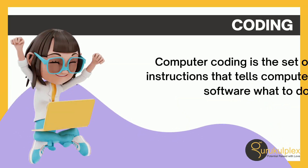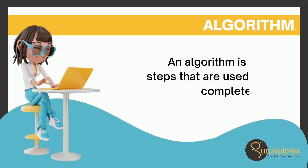Computer coding is the set of instructions that tells computer software what to do. An algorithm is a set of steps that are used to help complete a task.